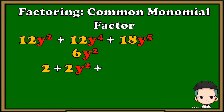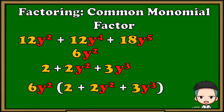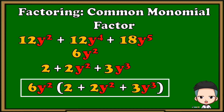Copy the operation, then divide the last term: 18 divided by 6 is 3, y raised to 5 divided by y squared is y cubed. Then arrange the answers: copy the monomial factor 6y squared and multiply it to the quantity of 2 plus 2y squared plus 3y cubed. Our answer is 6y squared multiplied by the quantity of 2 plus 2y squared plus 3y cubed.